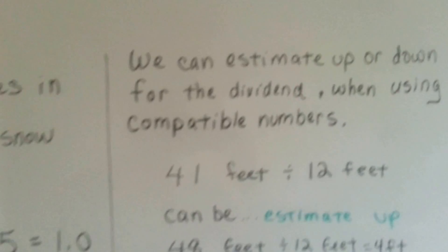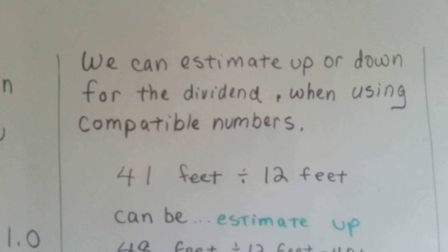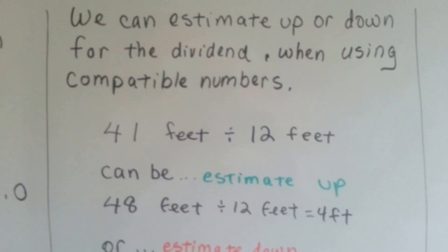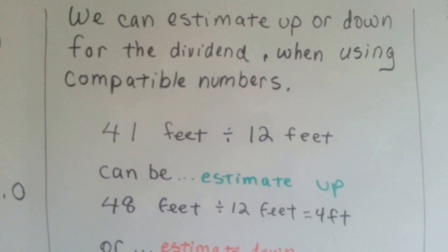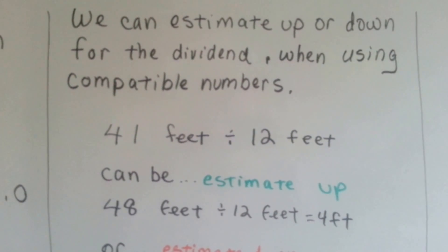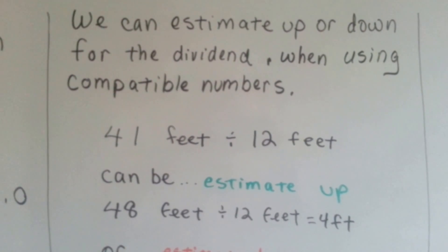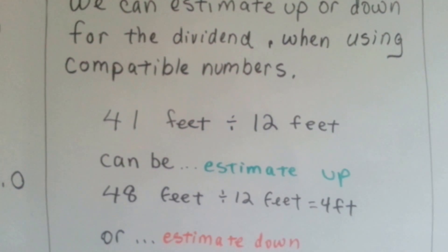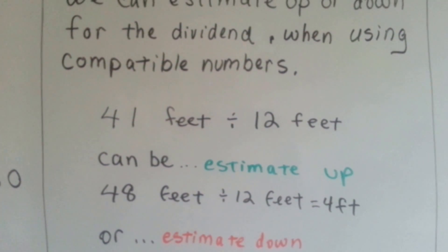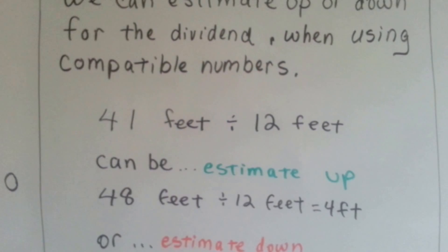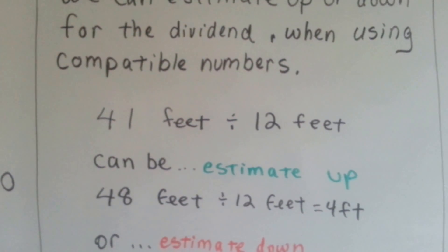Well, we can estimate up or down for the dividend when using compatible numbers. Whatever is compatible. If we're dealing in feet and you have 41 feet of lumber that you want to put in 12-foot piles, you can estimate up and say it's 48 feet divided by 12 because 12 and 48 are compatible. Then it would be 4 feet.